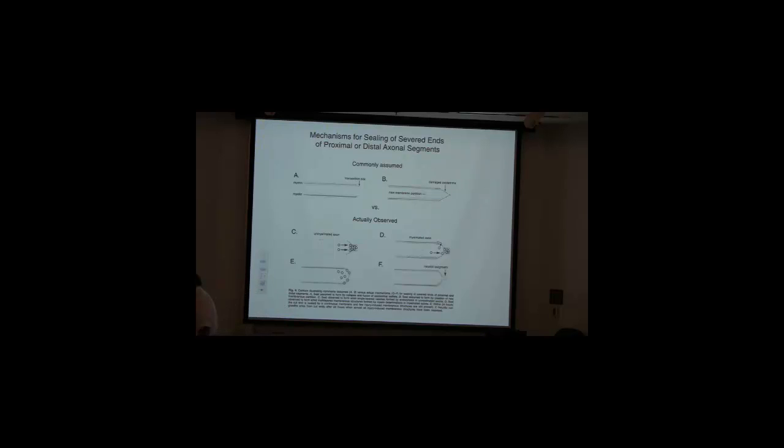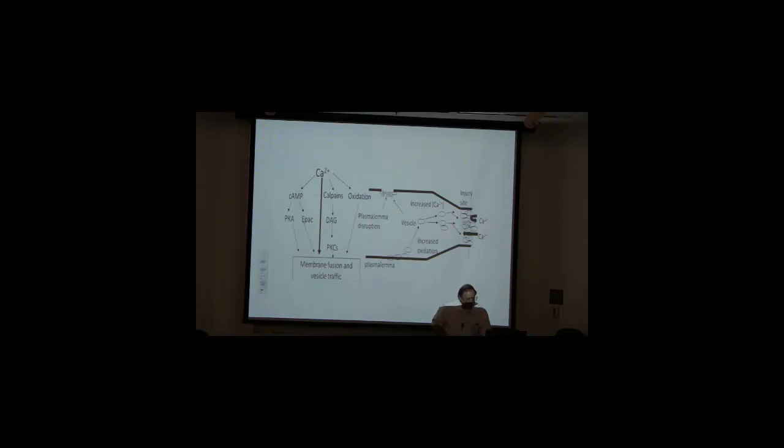And instead what was happening was that vesicles were accumulating either at complete cuts or if you made a hole in the membrane. Vesicles accumulated, to accumulate they needed calcium. To interact and fuse they needed calcium. And in fact, after 15 years or so of studies on it, we know a lot about what happens when you sever either invertebrate axons or vertebrate axons or any other eukaryotic cell.